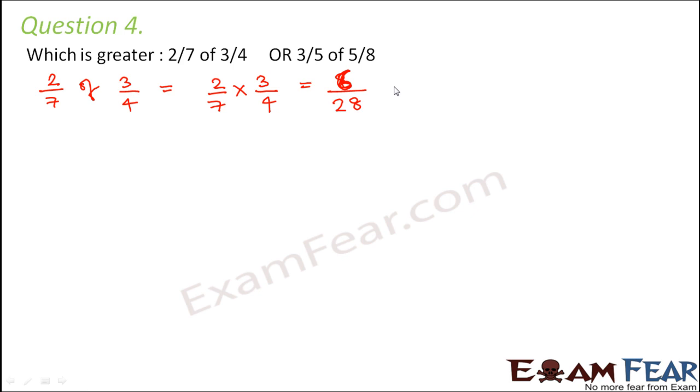So we can reduce it to its lowest form. Let us write the factors of 6: 1, 2, 3 and 6. Let us write the factors of 28: 1, 2, 7, 14, 4 and 28.